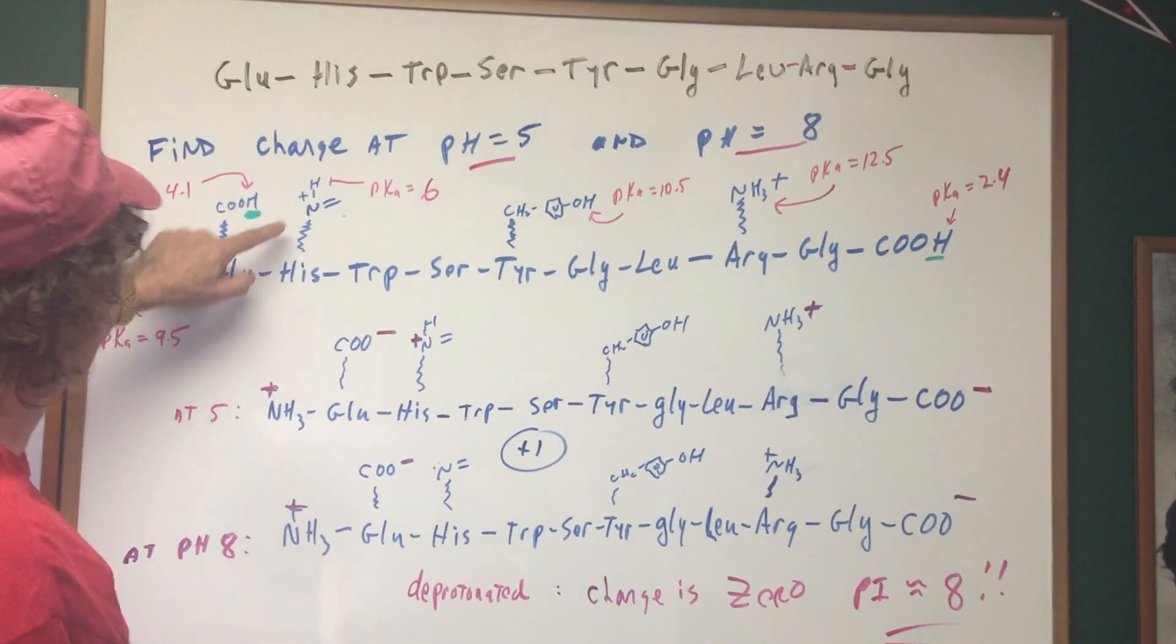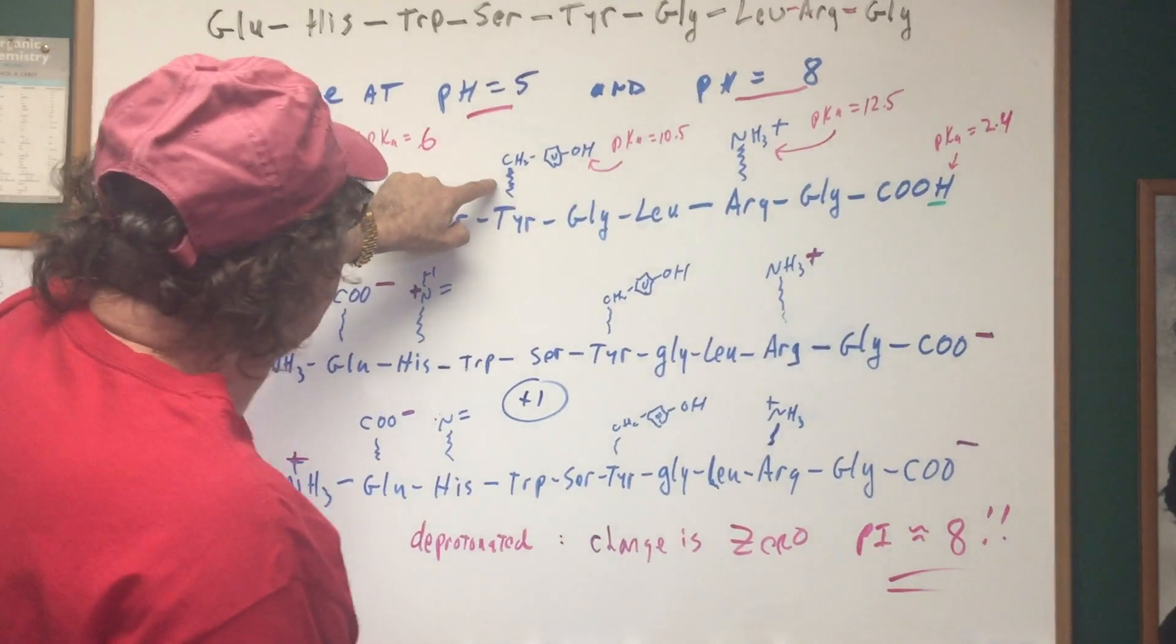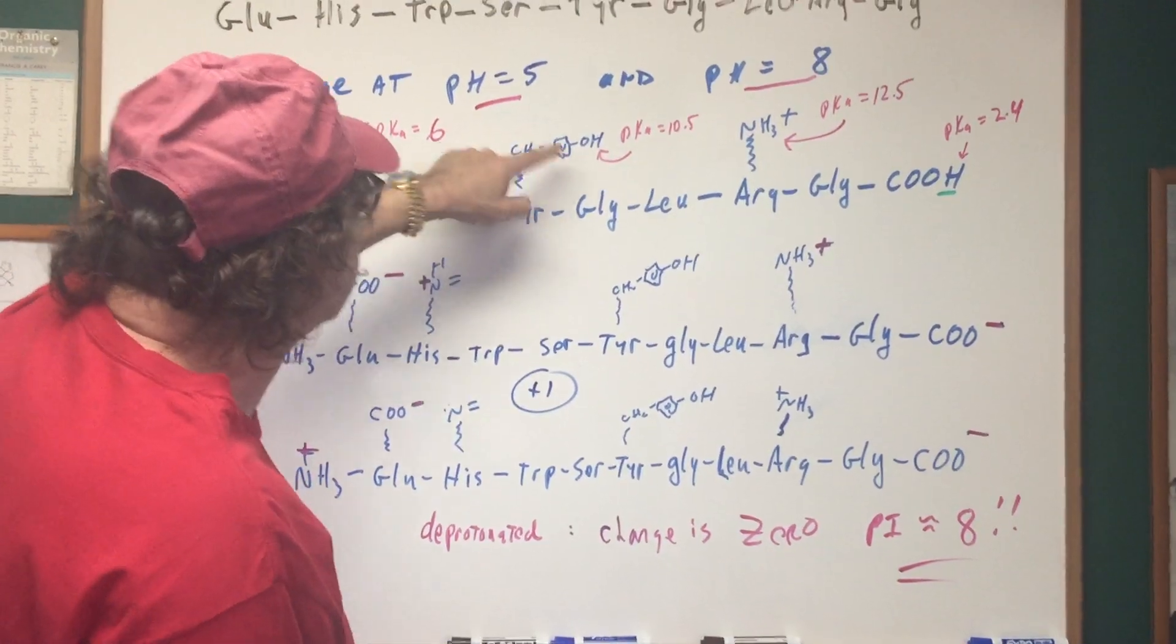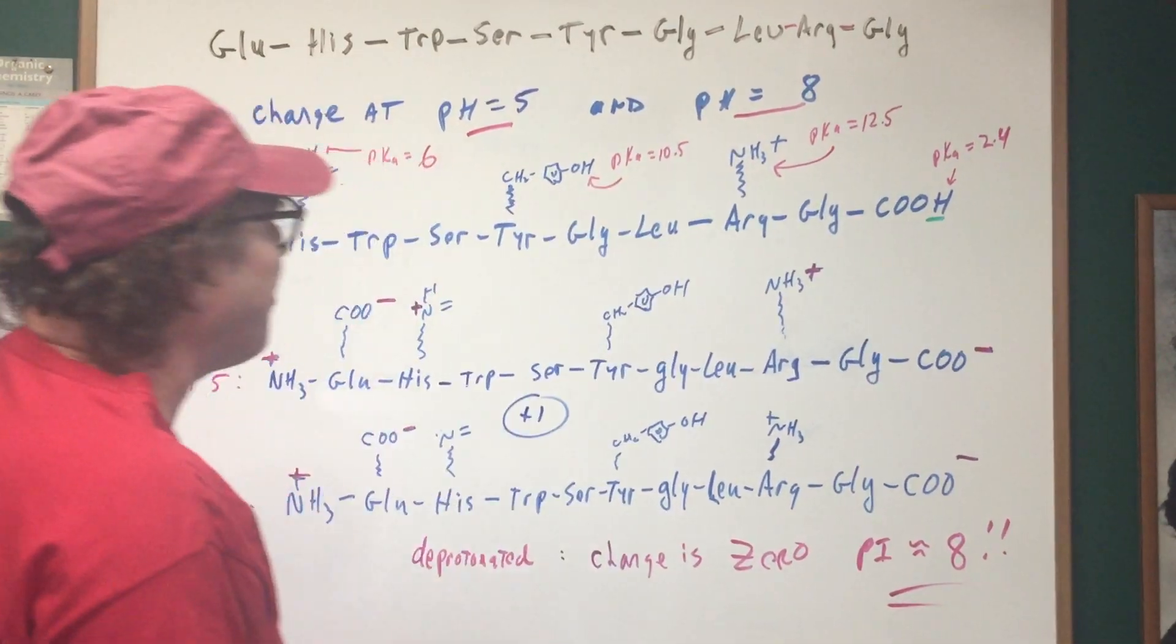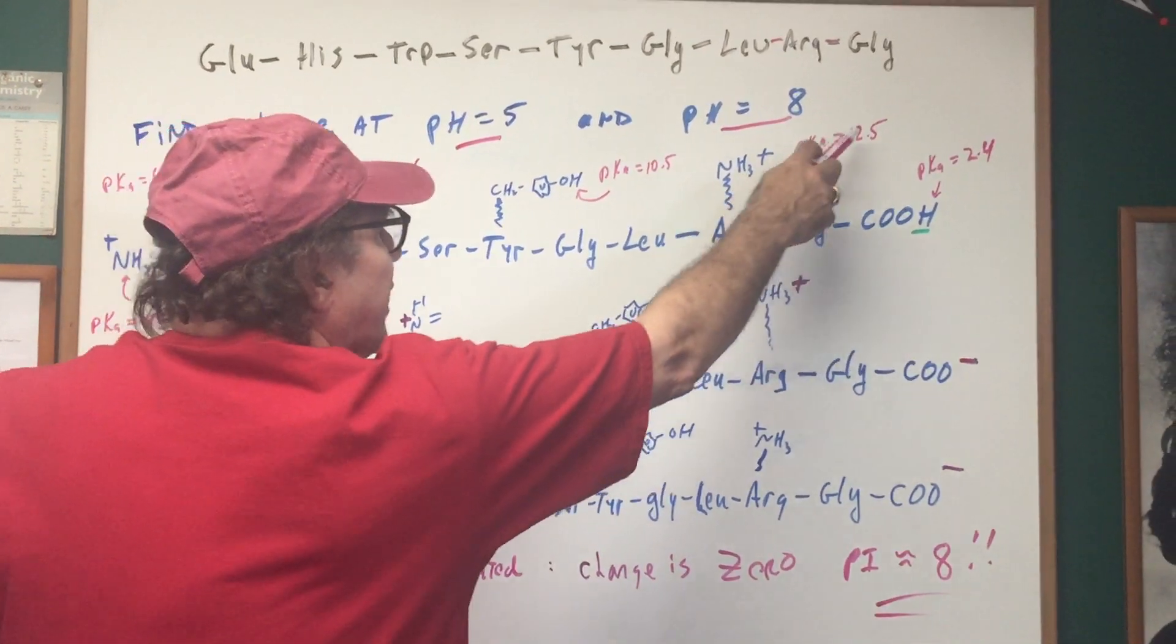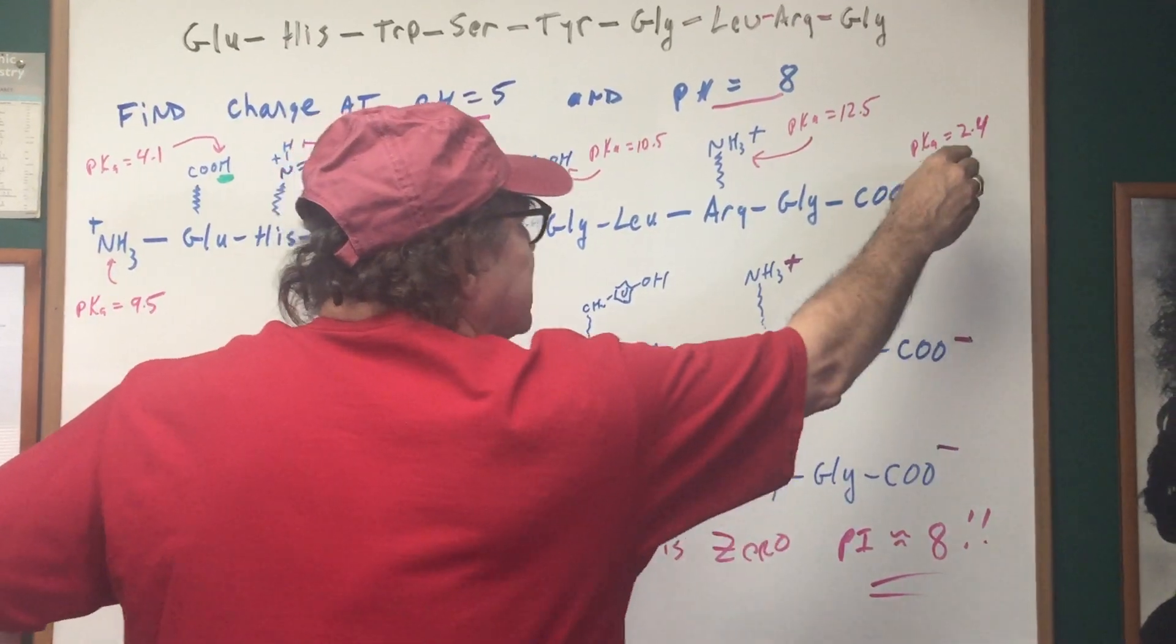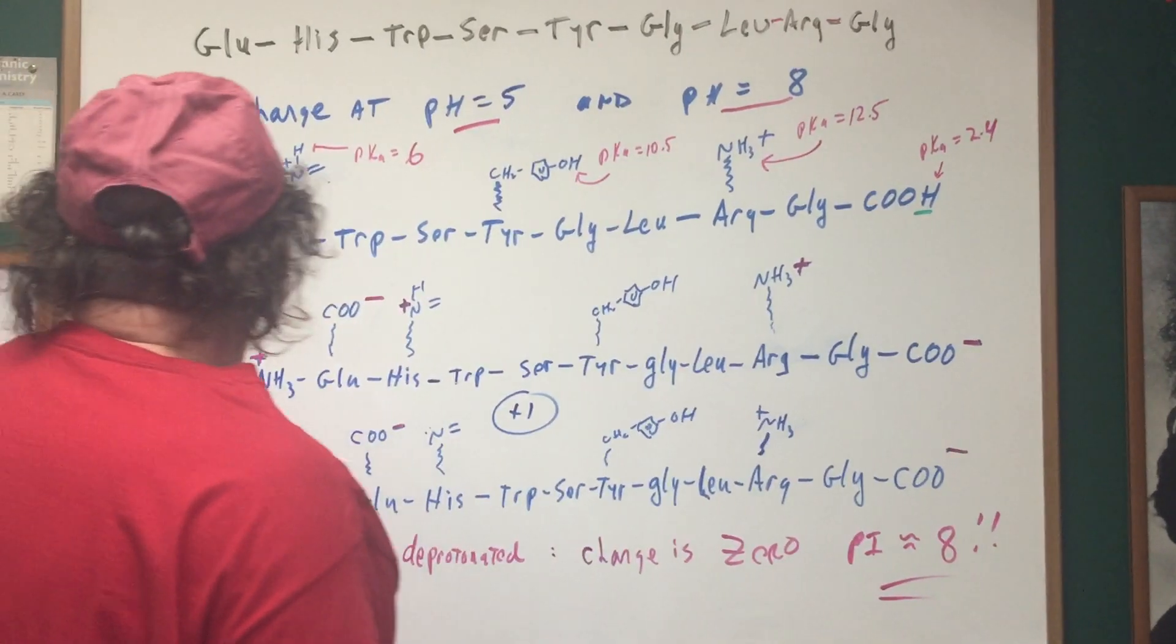Then I go over to the side chain of histidine. That would be a six. Then I look up the PKA of the side chain of tyrosine. That's 10.5. And then we go to the PKA of arginine. That's 12.5. And then COOH is the alpha carboxy group of glycine.